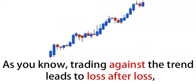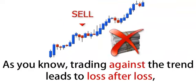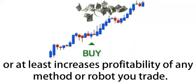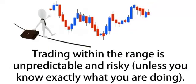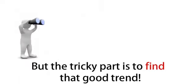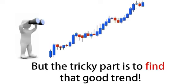As you know, trading against the trend leads to loss after loss, but trading with the trend leads to profits, or at least increases the profitability of any method or robot you trade. Trading within the range is unpredictable and risky unless you know exactly what you're doing. The truth is that most forex systems or robots make money with the trend but lose money in a choppy market. But the tricky part is to find that good trend.